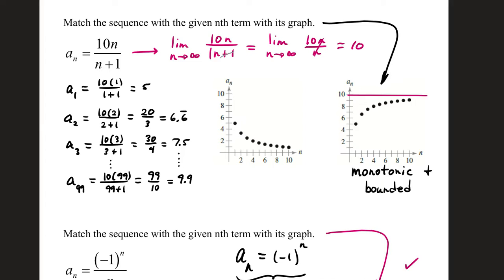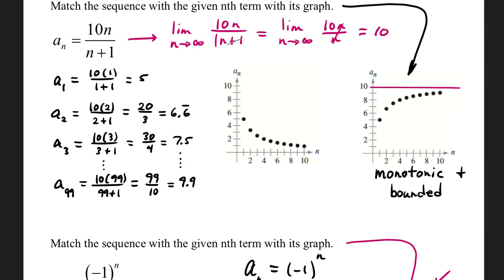Match the sequence with the given nth term with its graph. Now, I gave you a couple of options on graphs in class we picked from. But what we did is we took our nth term, we built some terms, and then we matched it with the dots to see which one matched more appropriately. If your nth term is defined as 10 times n over n plus 1, your first term is 10 times 1 over 1 plus 1, that's 5.